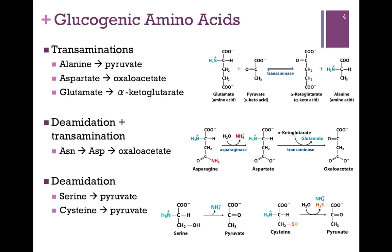Let's look first at the glucogenic amino acids. Some of these you've already seen in the transamination reactions. At the top of the screen here, alanine can be transaminated to form pyruvate. And in the same reaction, in the opposite direction, glutamate can be transaminated to form alpha-ketoglutarate. In the center of our screen here, aspartate can be transaminated to form oxaloacetate. So in each of these cases, the products arise from transaminations.